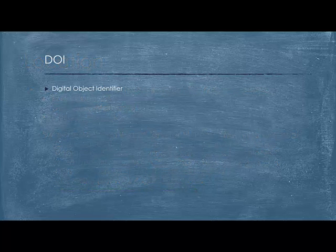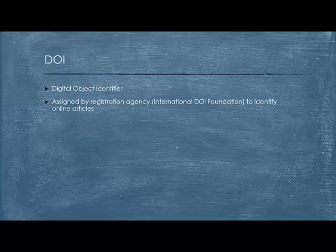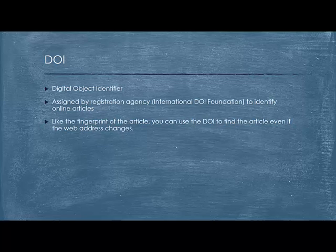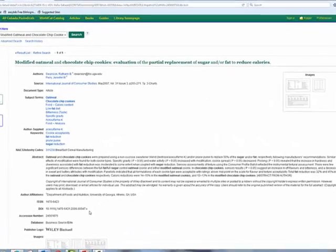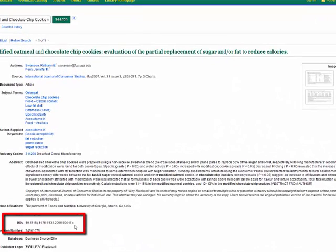So what is a DOI? DOI stands for Digital Object Identifier. It's a series of letters and numbers assigned by a registration agency, the International DOI Foundation, to identify online articles. It's like the fingerprints of an article. You can use the DOI to find the article even if the web address it's located in changes. To locate a DOI, you can look at the article's record and you'll see the DOI is located right down here.